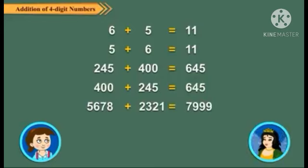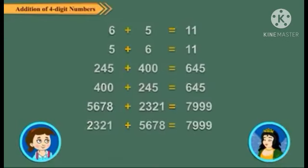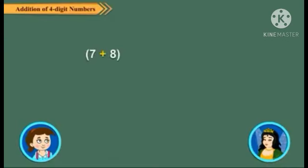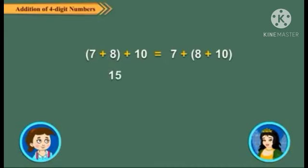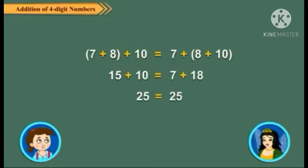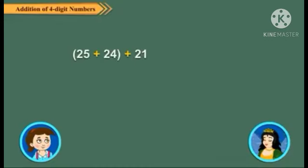Let us see these examples. Neha, you should also know the grouping property of addition. This property says: in addition of 3 or more numbers, the order of the numbers does not matter. Let us check this by some examples.